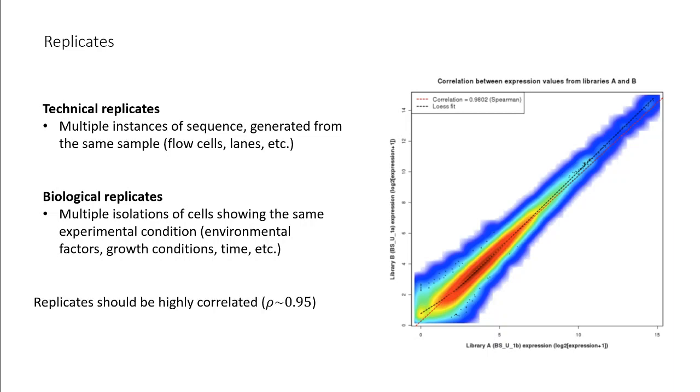It's assumed that replicates are highly correlated with one another. At right, you can see the comparison of the expression levels of genes between two different libraries, and you can see that they are highly correlated.